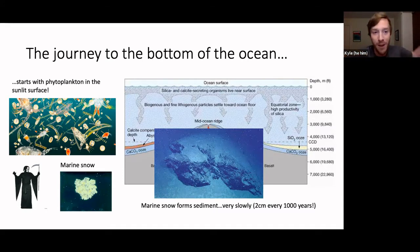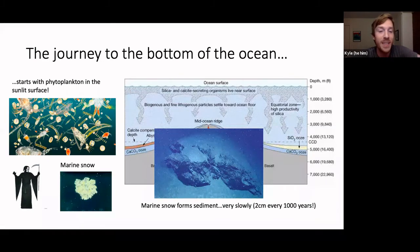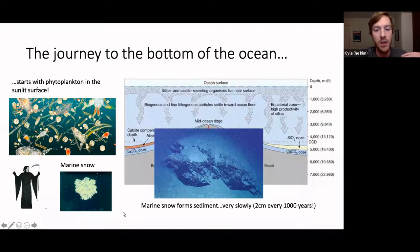This process is happening super slowly — sediment forms at about two centimeters every thousand years. Comparing that to the snowstorm we just had in New York, it's a lot faster. So this sediment is taking a really long time to form and rain its way down from the surface ocean to depth.